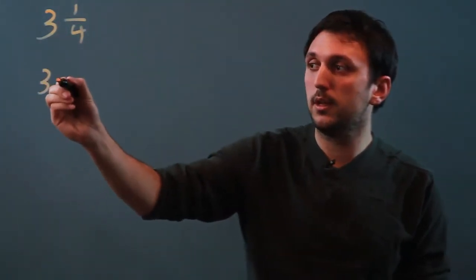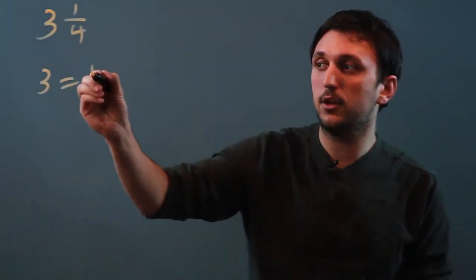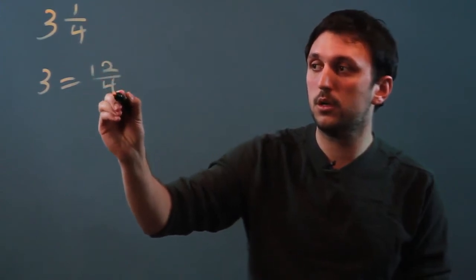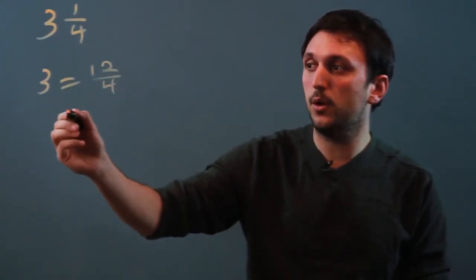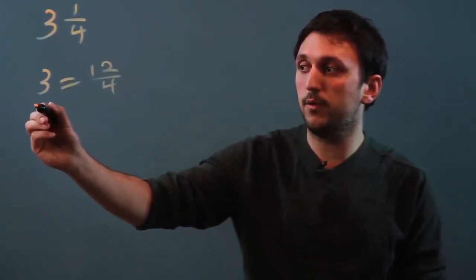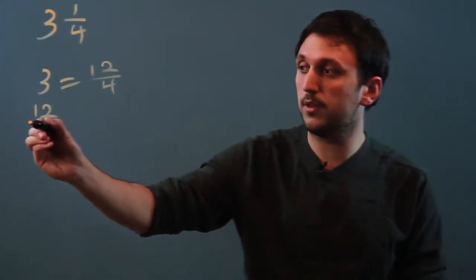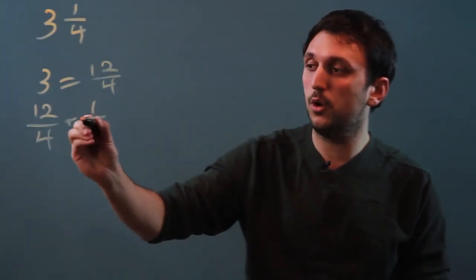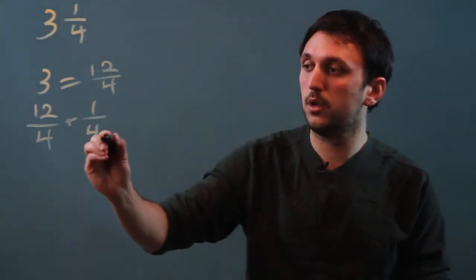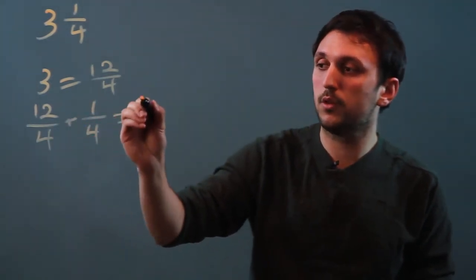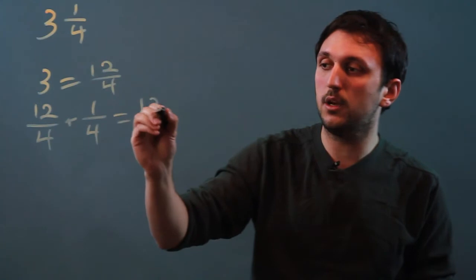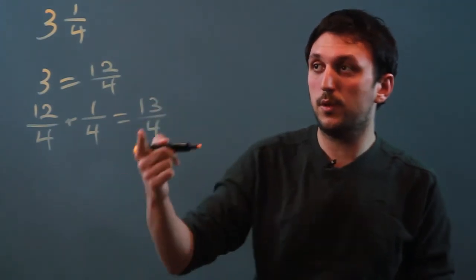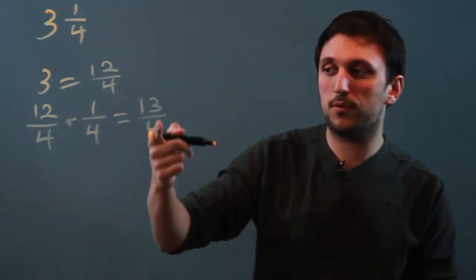Well, 3 is like saying 12 over 4. And then we also have 1 fourth. So we say 12 over 4 plus 1 over 4 equals 13 over 4. So now we have a proper fraction.